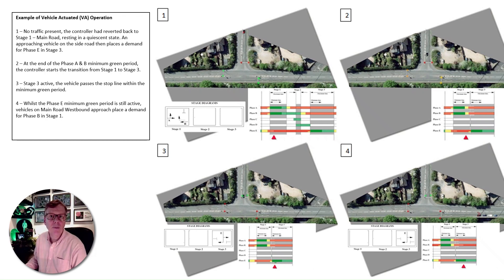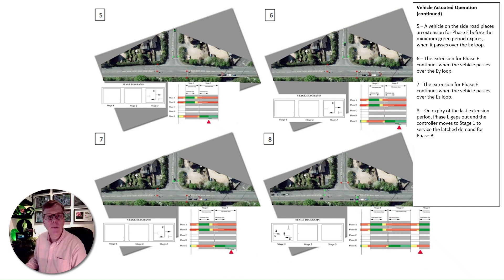When traffic approaches the junction, demands from the relevant detection equipment will be received by the controller. This will then process these demands, moving from stage to stage in a responsive manner. These movements will be serviced in the cyclic order defined in a stage sequence, but will allow stages to be missed out if there are no demands for the constituent phases within them. Each stage that appears will run for a duration equivalent to the minimum green period of the constituent phases. On completion of the minimum green period, the stage will either terminate or continue to operate if demands persist. As vehicles are detected whilst the associated phase is active, an extension time will be added to the green period — typically one and a half seconds for system D loops.